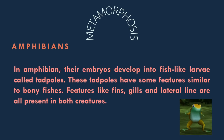Other species that go through metamorphosis are amphibians. In amphibians like frogs or toads, their embryos develop into fish-like larvae called tadpoles. These tadpoles have some features similar to bony fishes, such as fins and gills.